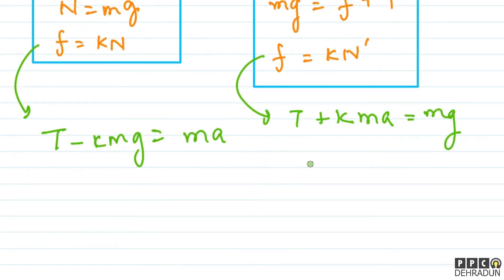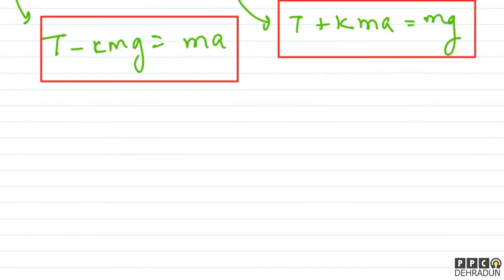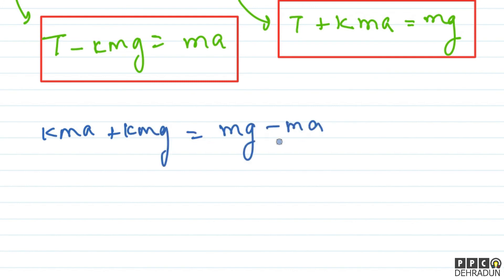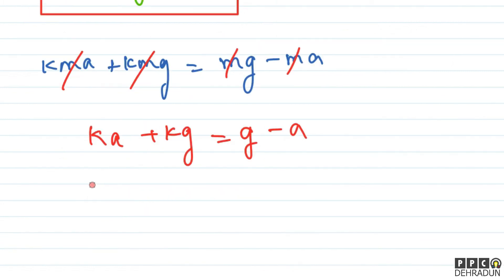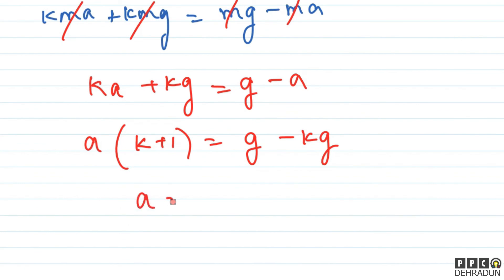We have two equations. To eliminate tension, we subtract one from the other. This gives: k·m·a plus k·m·g equals m·g minus m·a. Since m appears in every term, it cancels out. We get: k·a plus k·g equals g minus a. Factoring 'a': a(k plus 1) equals g minus k·g, which gives a(k+1) equals g(1-k), and finally the acceleration value.